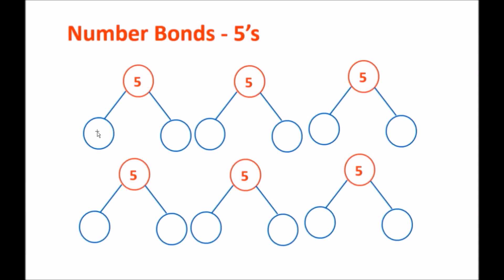Let's write them out as number bonds — I'll show you how that looks. The fives are all the whole. The first one we created was zero and five. The second was one and four. The third number bond was two and three. After that was three and two, then the next one was four and one, and finally our last number bond was five and zero.